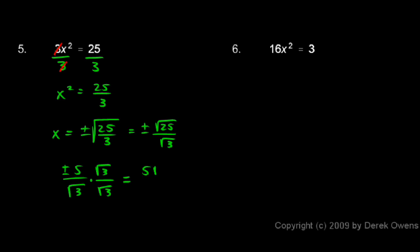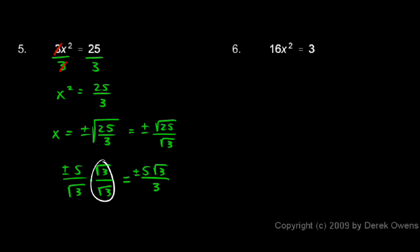So I end up with 5 times the square root of 3 on the top. On the bottom, the square root of 3 times the square root of 3 is simply 3. So plus or minus 5 root 3 over 3 is my answer. When I multiplied by the square root of 3 over the square root of 3, that got my radical sign out of the denominator, but it introduced a radical into the numerator — and that's okay. The goal is to rationalize the denominator, and this is considered properly simplified.